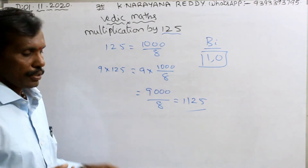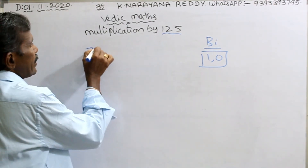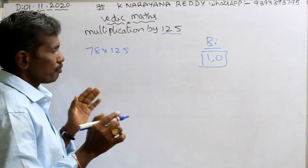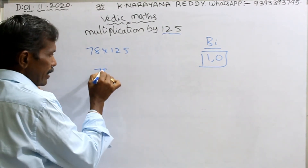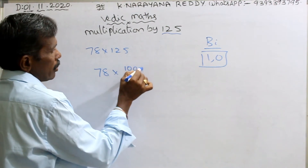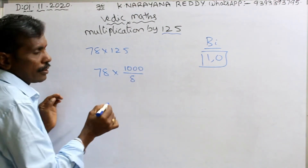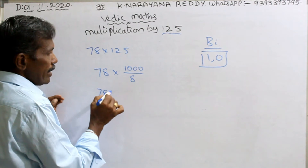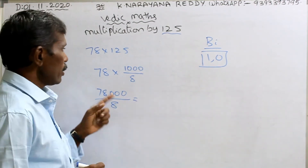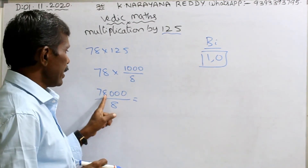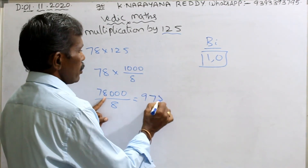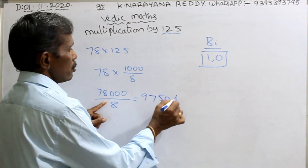Take another example: 78 into 125. Same method — 78 into 1000 by 8, that means 78,000 by 8. 78,000 divided by 8 is nothing but 9750. That's all.